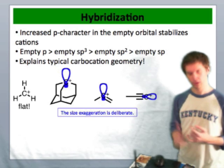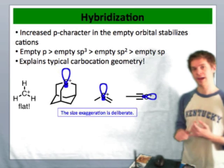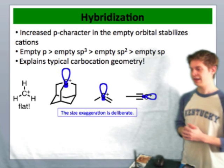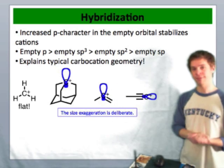In the case of cations, this is a destabilizing effect which is the opposite of what we see for anions which we discussed in the last video.